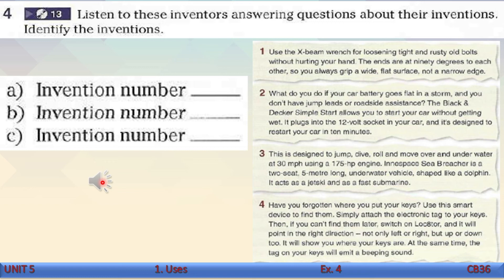A: So, tell me about your invention. What's it for? It's for finding lost items. B: Okay, and what about this device? What's it used for? It's used for charging a flat battery from inside the car. C: Tell me about this invention. What can it be used for? You can use it to move quickly over and under water. Great. Now let's check the answers. A is 4, B is 2, and C is 3.